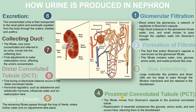Step four: the proximal convoluted tubule. The filtrate moves from the Bowman's capsule to the proximal convoluted tubule, where reabsorption of essential substances like glucose, amino acids, and ions such as calcium occurs, returning them to the bloodstream.